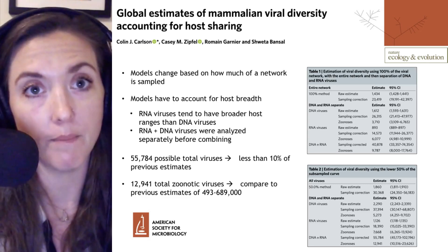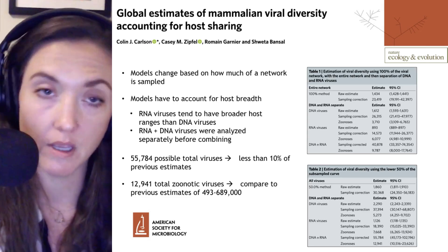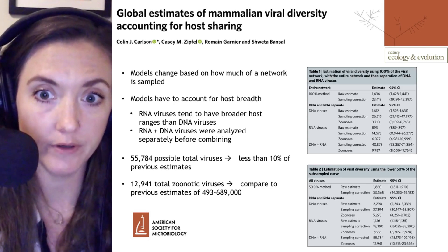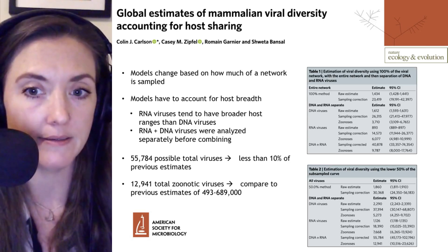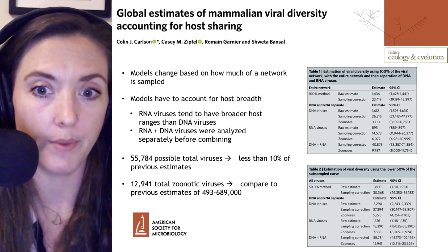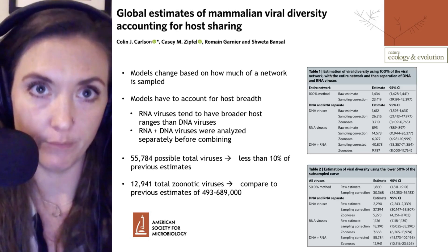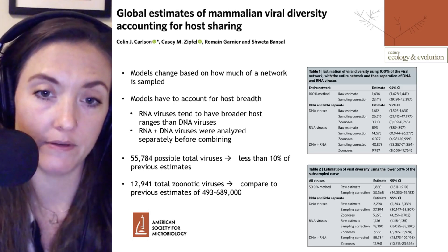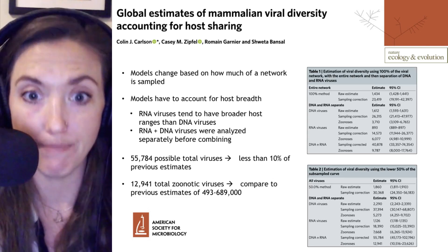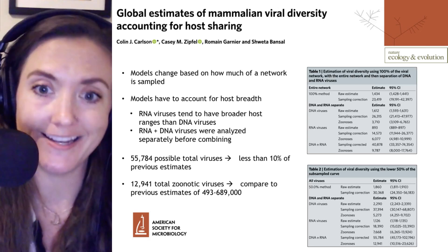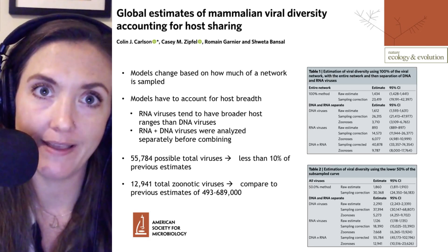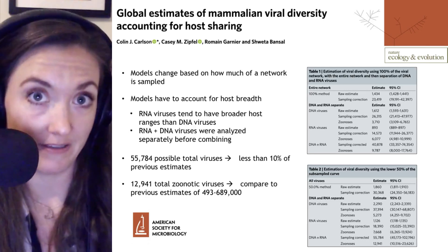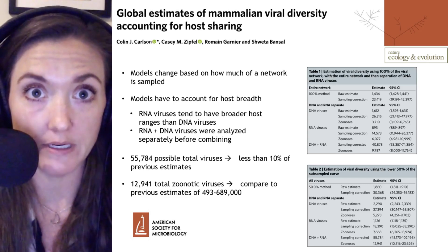They analyzed these separately before combining to make their final predictions, shown in the tables on the right-hand side. One table considers 100% of their network — all 5,291 mammalian species — and another, more conservative table uses an iterative fit of 50% of the network. Using those conservative numbers, they estimated nearly 56,000 possible total viruses in all mammal populations, which is less than 10% of previous estimates. Within that 56,000, nearly 13,000 are potential zoonotic viruses that could infect people — compared to previous estimates of half a million, this is quite a dramatic decrease.